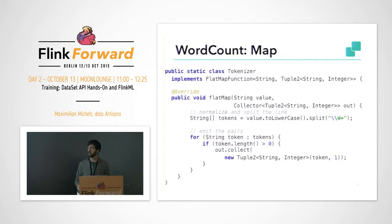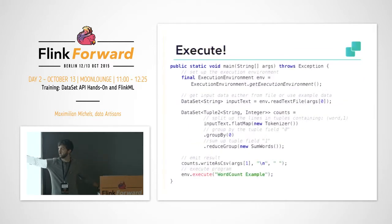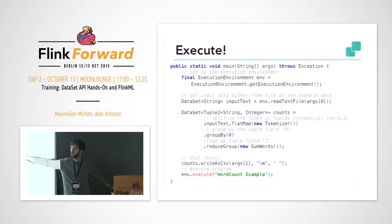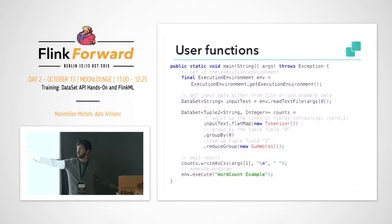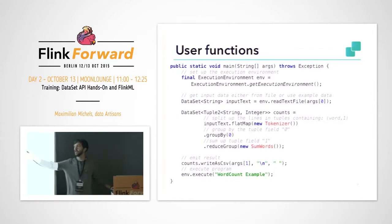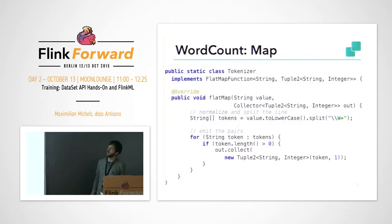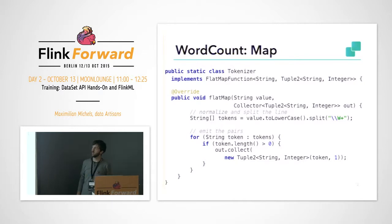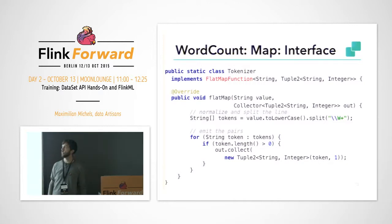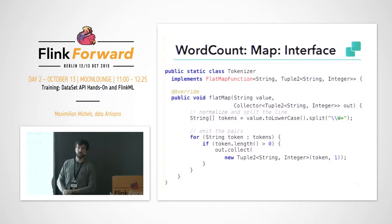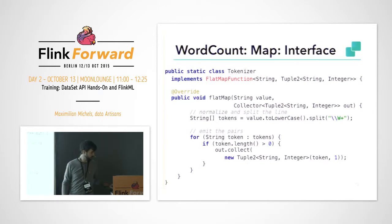So what actually happens inside? We created these transformations — flatMap and reduceGroup — and we specified the functions that actually do the work. We still have to see what the tokenizer does and what the SumWords function does. The tokenizer is actually implemented as a class that implements the FlatMapFunction interface.